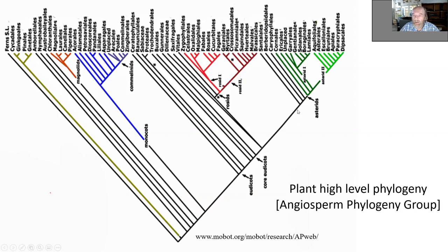And then we have the last big area, and that's the asterids, with some basal lineages, but then asterids one and two, and that's the second largest lineage in terms of species diversity.